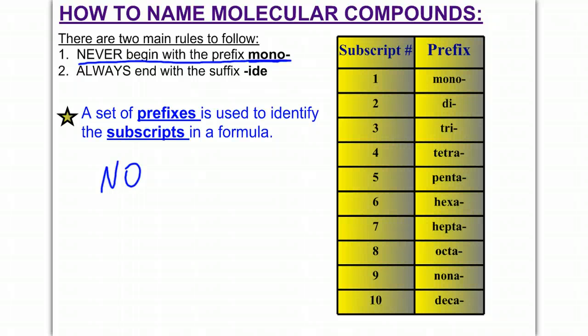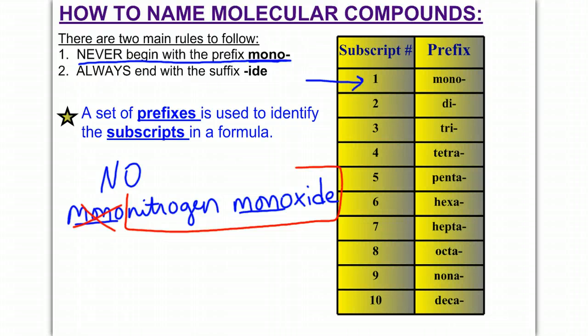That would be nitrogen and oxygen. The prefix for one is mono, so you would want to call this mononitrogen, and because we have one oxygen, you would call that monoxide. Notice I didn't write mono oxide. I dropped one of the O's, and so this is to tell me I have one nitrogen and one oxygen, which is the case in my formula. However, we never start the name with mono, so really the answer is just going to be nitrogen monoxide for NO.